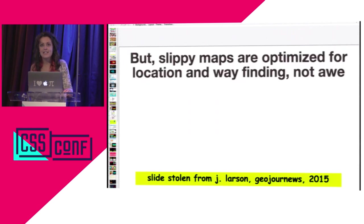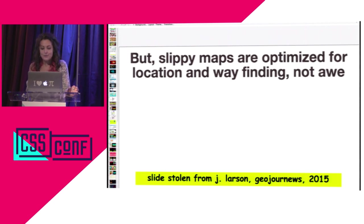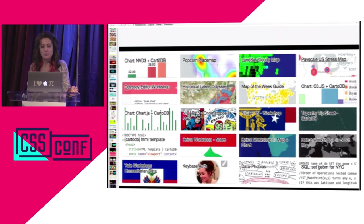I was inspired by a slide I saw at a geo conference a couple of months ago from a friend of mine, Jeff Larson, who works at ProPublica. They had just finished Losing Ground, a big retrospective about Louisiana land loss using satellite imagery. His complaint was that slippy maps are optimized for location and wayfinding — like what you'd search for in navigation with Google Maps — but not for awe. That was really sad to me, because this is my chosen profession, so it's not very fun to have people say your work is awful and not awesome.